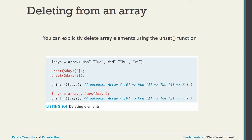You can also delete a value from the array using the unset() function. Specify the array name and the index key you want to delete. For example, unset(dollar-sign days[2]) deletes Wednesday (index 2), and unset(dollar-sign days[3]) deletes Thursday (index 3).